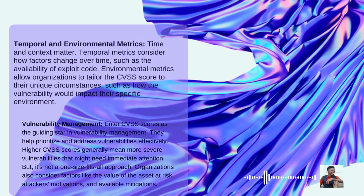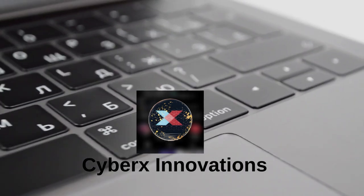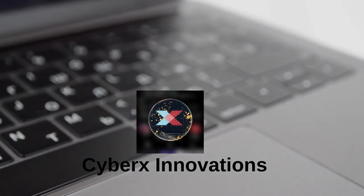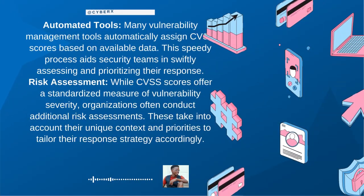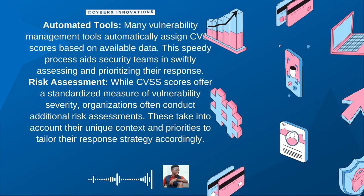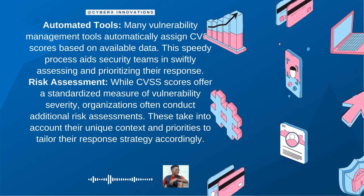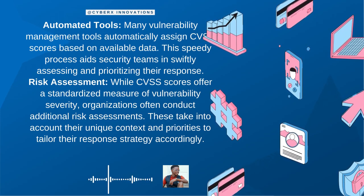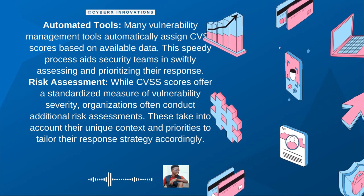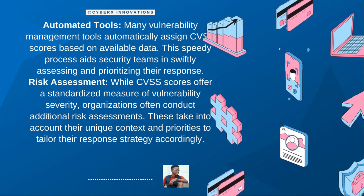Mitigations: if there's a way to lessen the impact of a vulnerability, like through workarounds or fixes, the CVSS score can be adjusted downward, reflecting the reduced potential impact or exploitability. Many vulnerability management tools automatically assign CVSS scores based on available data, and this speedy process aids security teams in swiftly assessing and prioritizing their response.